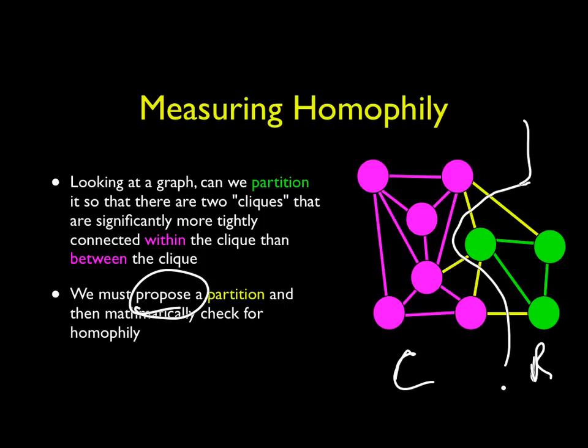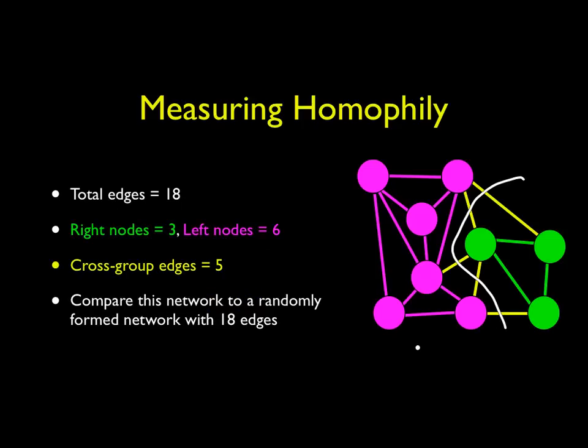Then what we do is we start doing some counting. We count the number of left nodes, that's six. We count the number of right nodes, that's three. Then we count the total number of edges, which is 18, and the cross-group edges, the edges that cross our little border that we artificially laid into this.